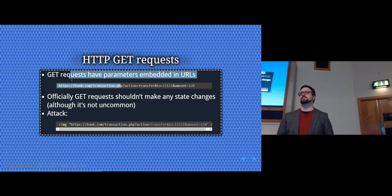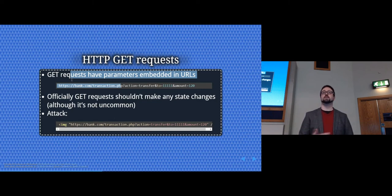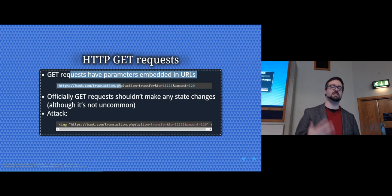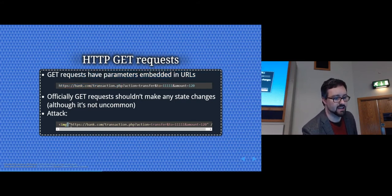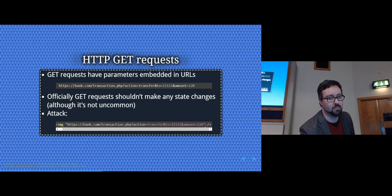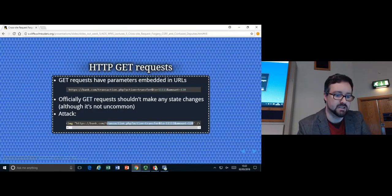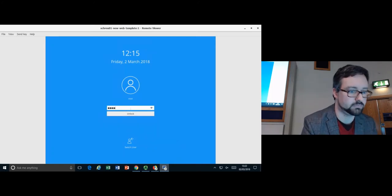Officially, GET requests shouldn't make any state changes — they should just retrieve information — but it's quite common for them to do so. An attack can be as simple as including an image tag with the malicious URL as the source. The browser happily loads it, and the cookie from that domain gets sent along, meaning the request is considered authorized.